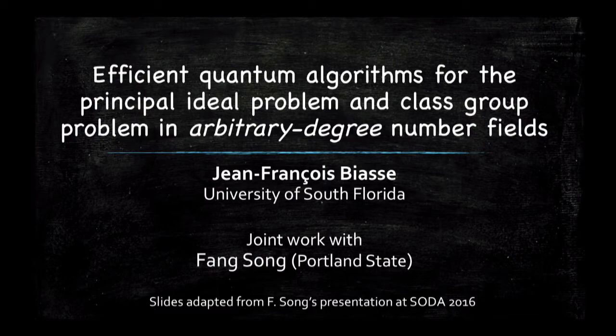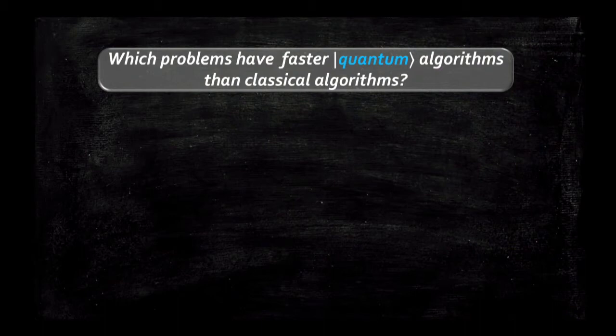I would like to specify that it's not completely new. It was work from 2016 that was presented about a year ago by Fang at the SODA Conference in Theoretical Computer Science. It concerns the search for solutions to problems in computational number theory for which we can propose exponentially faster solutions using quantum computers.